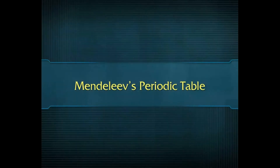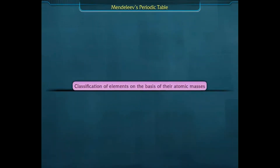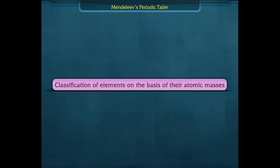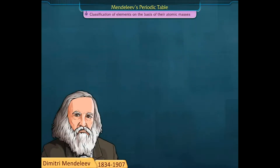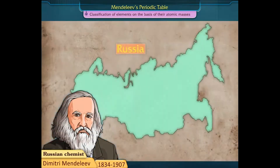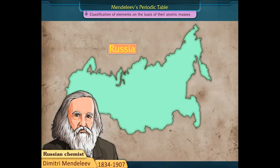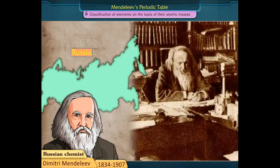Mendeleev's Periodic Table is a classification of elements on the basis of their atomic masses. Dmitry Mendeleev, a Russian chemist, had great interest in the study of elements.